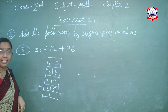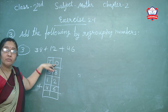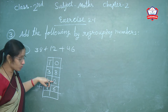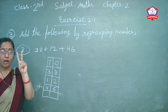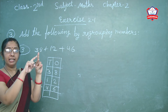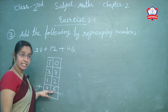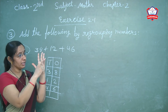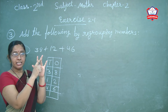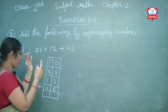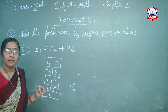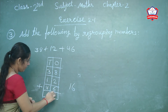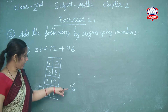Let's count. First start the ones column. First digit is 8, plus 2. Count 2 ahead of 8: 8, 9, 10. Next count 6 more: 10, 11, 12, 13, 14, 15, 16. So write 16. 16 means 6 is ones — write 6 in the ones column and 1 is tens.